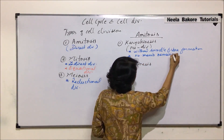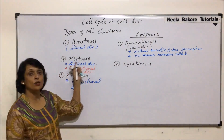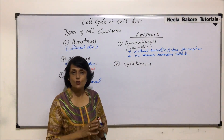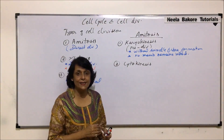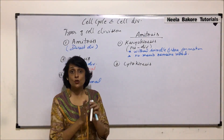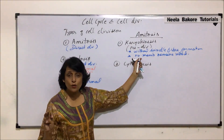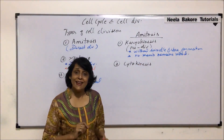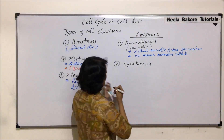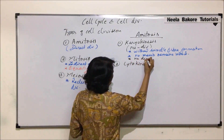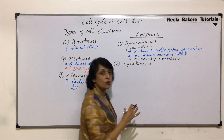Karyokinesis — nuclear division — takes place without spindle fiber formation, and the nuclear membrane remains intact. In regular cell division like mitosis, the nuclear membrane dissociates, the nucleolus dissociates, chromatin fibers condense, and chromosomes are pulled by spindle fibers. But in amitosis, spindle fibers are not formed and the nuclear membrane also does not dissociate.